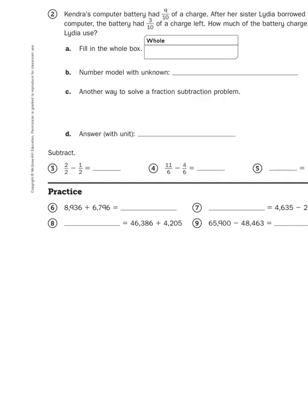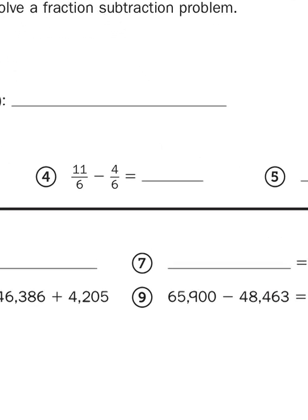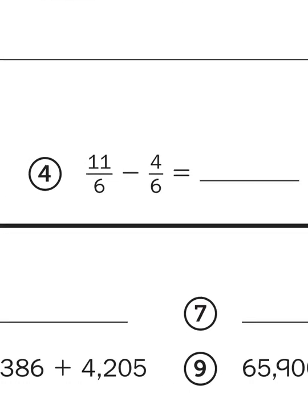Let's take a look at some of the straight-up algorithms that just give you the numbers to subtract. Like, for example, number four, 11-sixths minus 4-sixths. And again, all I want to do is look at the top number, the numerator, because my bottom numbers are the same. My denominators are the same, so they are like denominators. So all I have to do is subtract 11 minus 4. Well, 11 minus 4 would give me 7, 7-sixths.